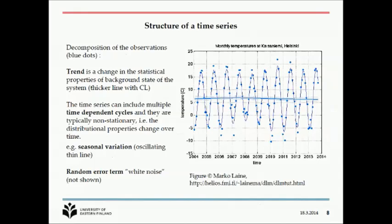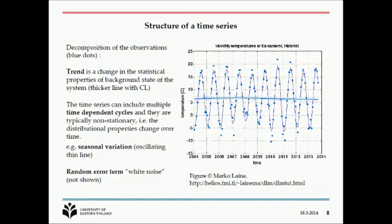Here we can see the structure of a time series. There are the observations as blue spots, and then there is some kind of trend in the data. First, there is a trend — within these nine years, quite constant, with no increase. Then there is seasonal variation. The third component usually presented is the random error term, which is expected to be just random noise if the other components are properly accounted for. This is what we are trying to do: decomposing the whole time series into these components.